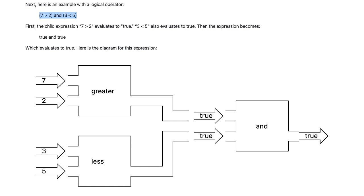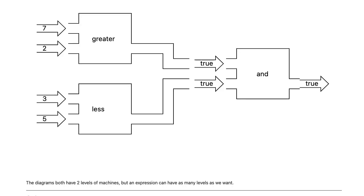Here is an example with a logical operator: 7 is greater than 2 and 3 is less than 5. First, the child expression 7 is greater than 2 evaluates to true. 3 is less than 5 also evaluates to true. Then the expression becomes true and true, which evaluates to true.